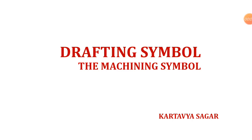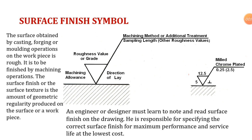Hello everyone, this is Kartyash Sagar, and in this video I am going to discuss drafting symbols, specifically machining symbols. First of all, you can see the surface finish symbol here. Any product is manufactured by different manufacturing processes like casting, forging, or molding operations. The surfaces are not smooth, so we have to use machining processes like turning, drilling, or grinding to make the surface smooth.